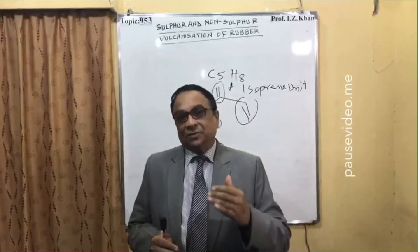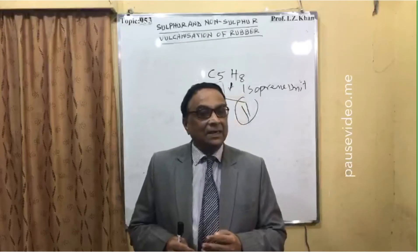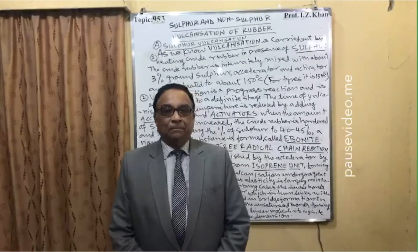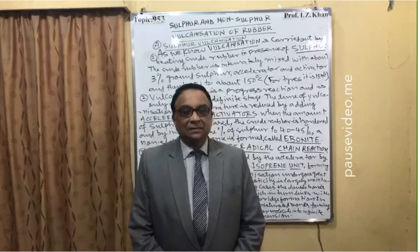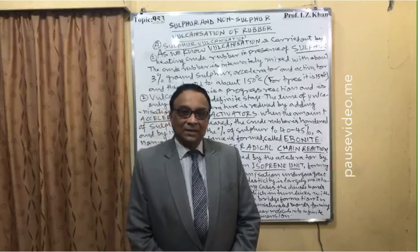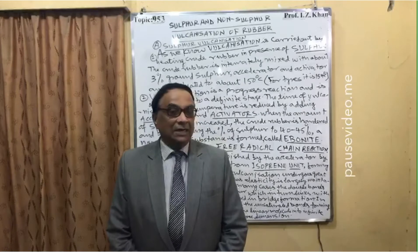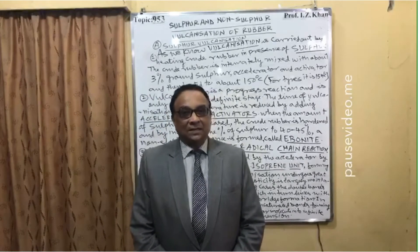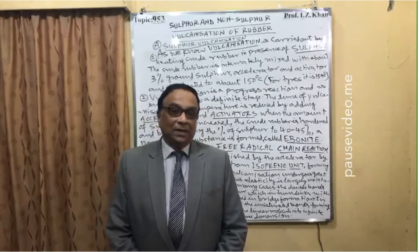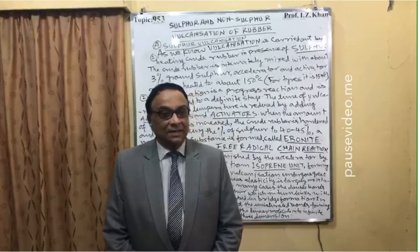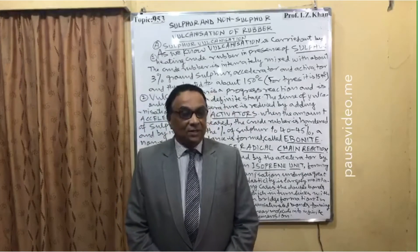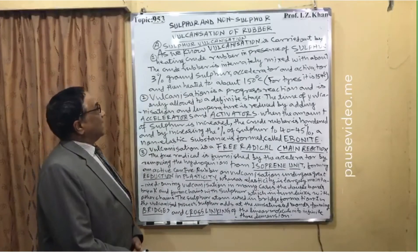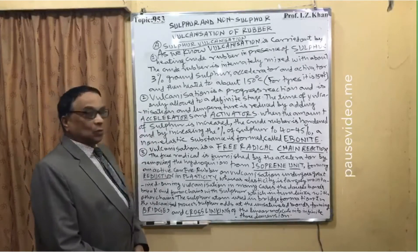So first I will discuss sulphur vulcanization and after that I will cover non-sulphur vulcanization. There are two types of vulcanization: sulphur vulcanization and non-sulphur vulcanization. In sulphur vulcanization, sulphur is bridged between different isoprene units (C5H8), which plays an important role in maintaining hardness, strength, and elasticity while drastically reducing the plasticity of the rubber, thereby improving its quality.